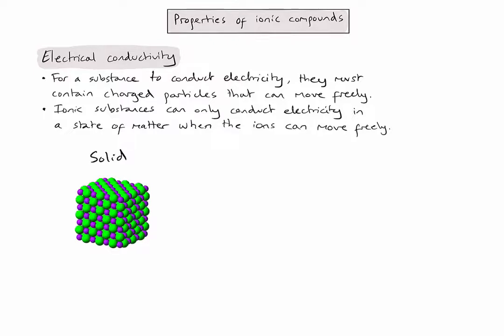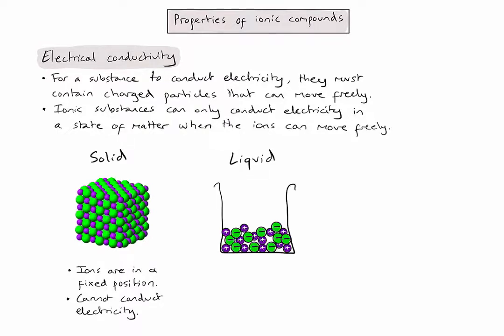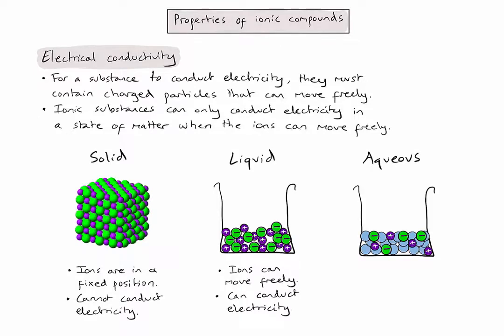In a solid ionic substance, the ions in the lattice are in fixed positions, so they cannot conduct electricity because they can't move freely. If we heat a solid ionic substance enough and turn it into a liquid, we have overcome those electrostatic forces of attraction in the lattice so that the ions can now move freely. Therefore, in a liquid or molten state, they can conduct electricity. Similarly, when an ionic substance is dissolved in water to form an aqueous solution, the ions can again move freely and therefore conduct electricity. These are the three states we're interested in in IB chemistry.